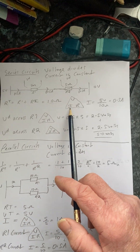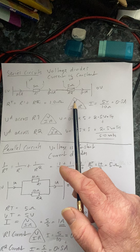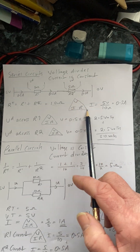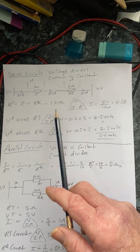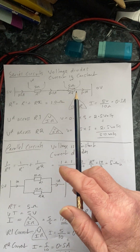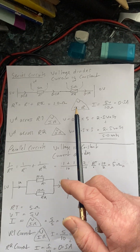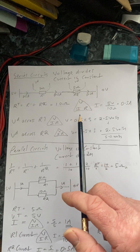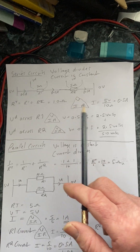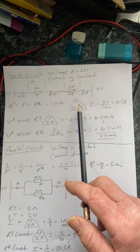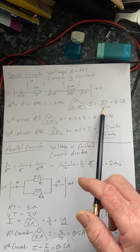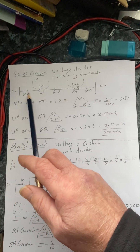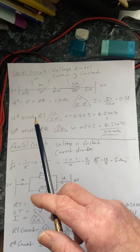Now to work out the current, which is constant, we use Ohm's Law — the most important equation you'll ever learn in electrical. Get this triangle in your mind: V = I × R, I = V ÷ R, R = V ÷ I. We want the current, so that's 5 volts divided by 10 ohms = 0.5 amps constant throughout this circuit.